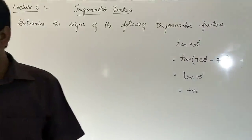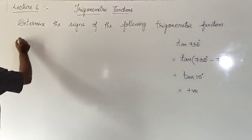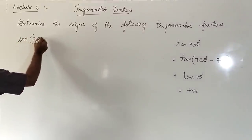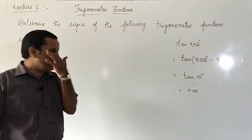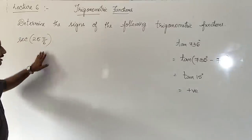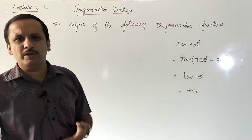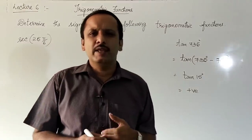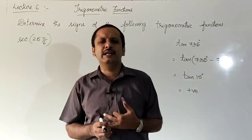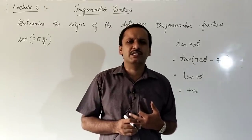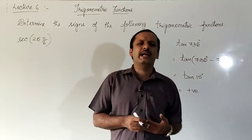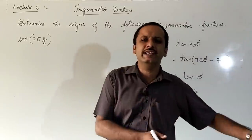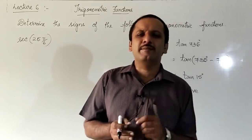Next: secant 25π/6. You can either convert to degrees or work in radians. In degrees you subtract multiples of 360; in radians you add or subtract multiples of 2π, because 2π radians equals 360 degrees. I will do it both ways.